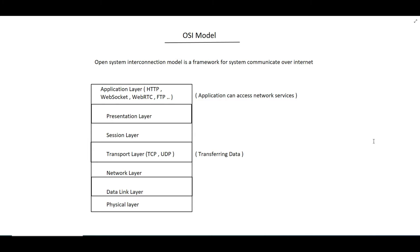Now let's see what is the OSI model. OSI stands for Open System Interconnection. The OSI model is a framework used for communication between systems over the internet. It contains 7 layers: the first is the physical layer, second is the data link layer, third is the network layer, fourth is the transport layer (which has TCP and UDP), fifth is the session layer, sixth is the presentation layer, and seventh is the application layer.